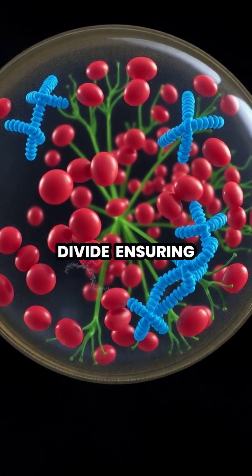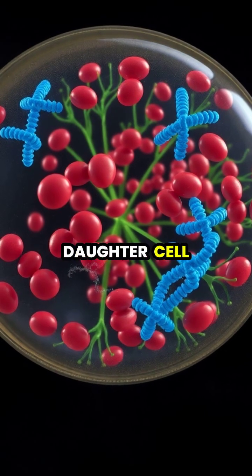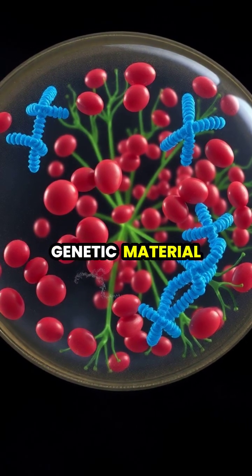Once DNA replication is complete, the cell can proceed to divide, ensuring that each daughter cell receives an identical copy of the genetic material.